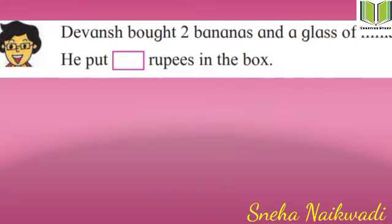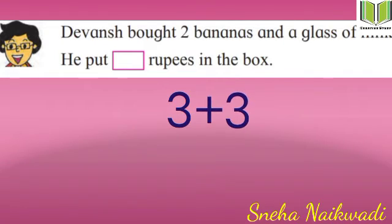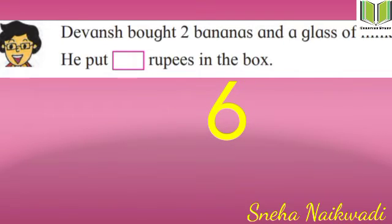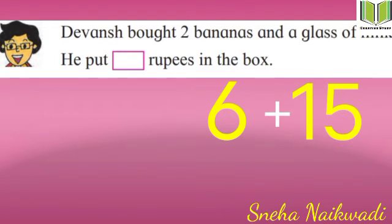Devansh bought two bananas and a glass of milk — he put how many rupees in the box? One banana is 3 rupees, so two bananas are 3 plus 3 = 6 rupees. A glass of milk is 15 rupees, so 6 plus 15 makes 21 rupees. Devansh put 21 rupees in the box.